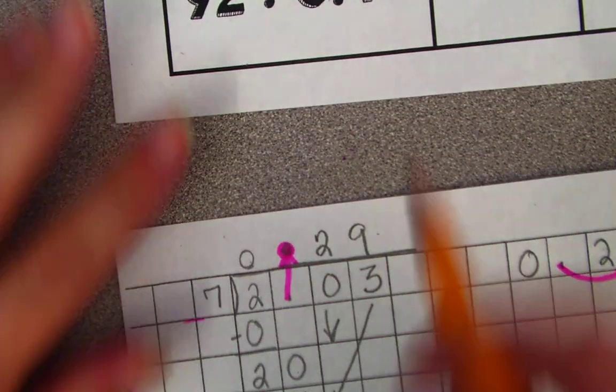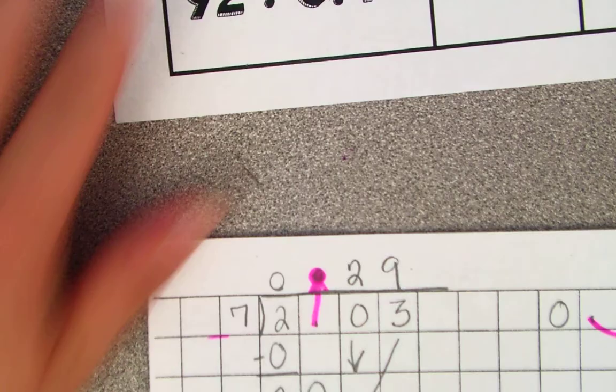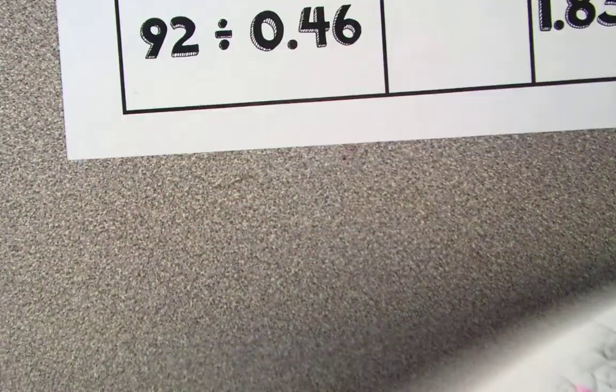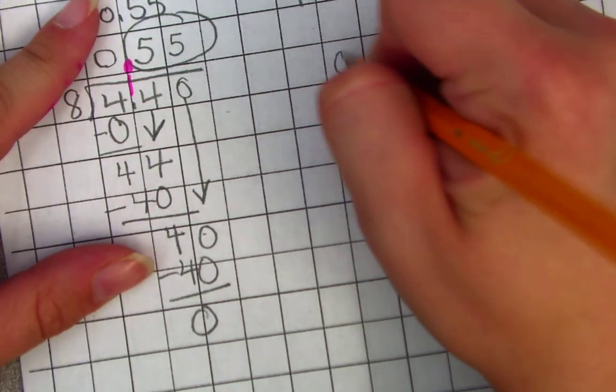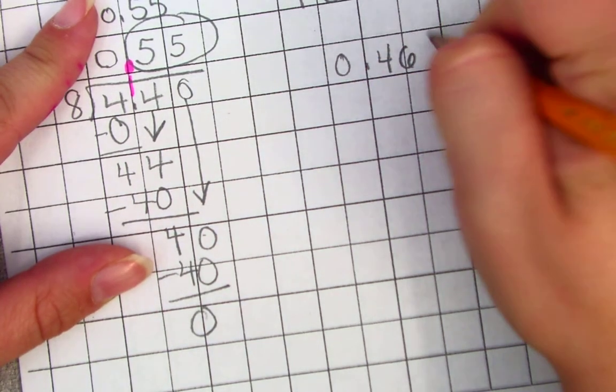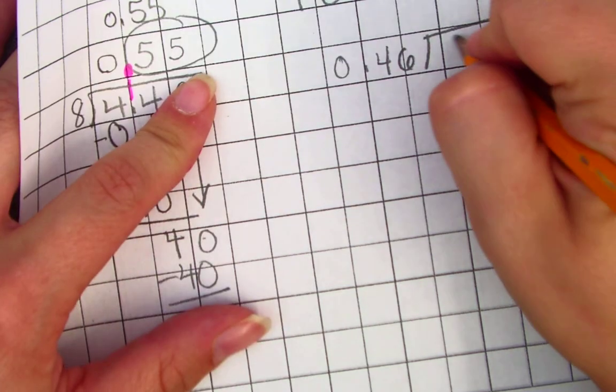Okay, let's look at the next one. 0.46 divided by 92. So I'm going to go back to my thing here. I've got to be able to see it. It is 0.46 divided by 92.